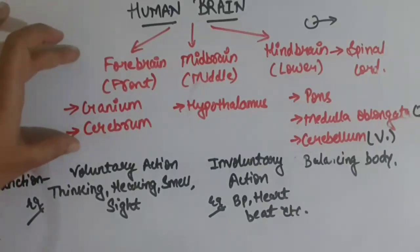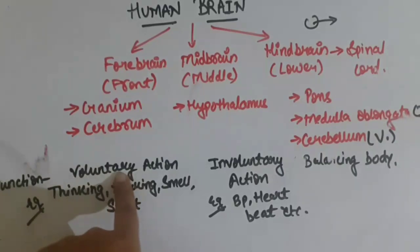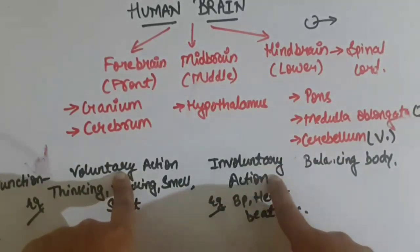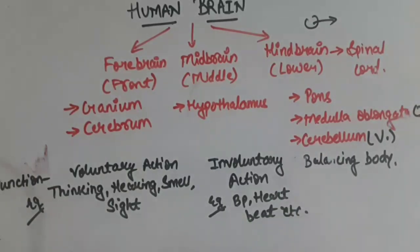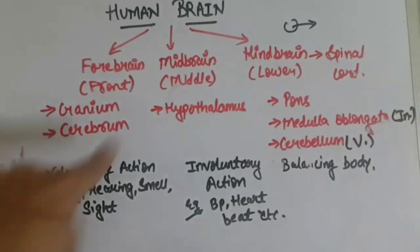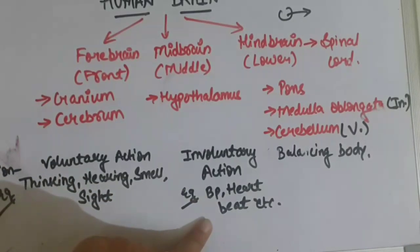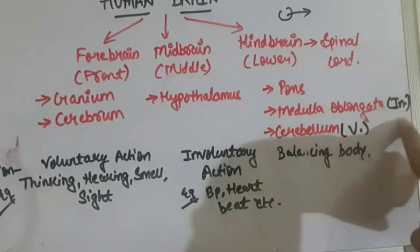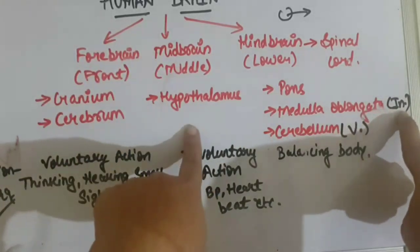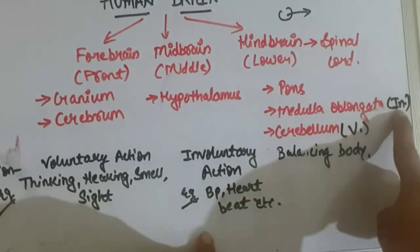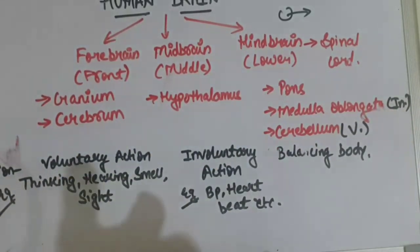The forebrain, present in the frontal part, is responsible for controlling voluntary actions. The midbrain is responsible for controlling involuntary actions. The hypothalamus and medulla oblongata work together to control involuntary actions like blood pressure, heartbeat, vomiting, and salivation.